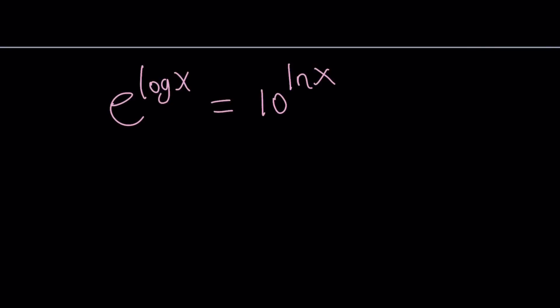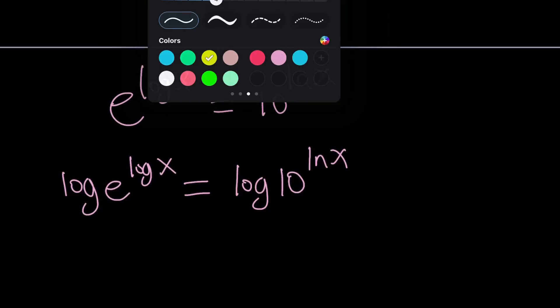What should I do? I could probably log both sides, couldn't I? Let's do it. Log e to the log x equals log 10 to the power ln x. Alrighty. What can I do next? And by the way, let's call this first method.